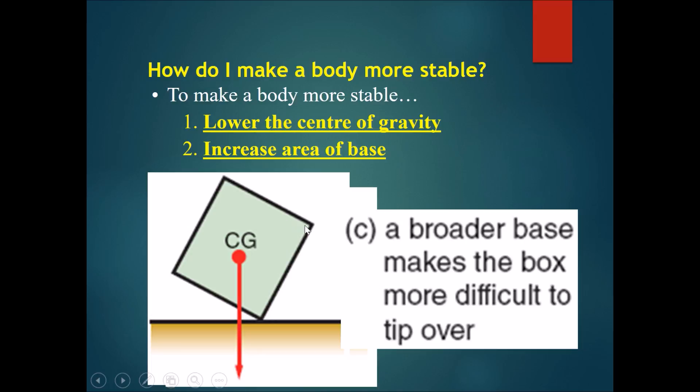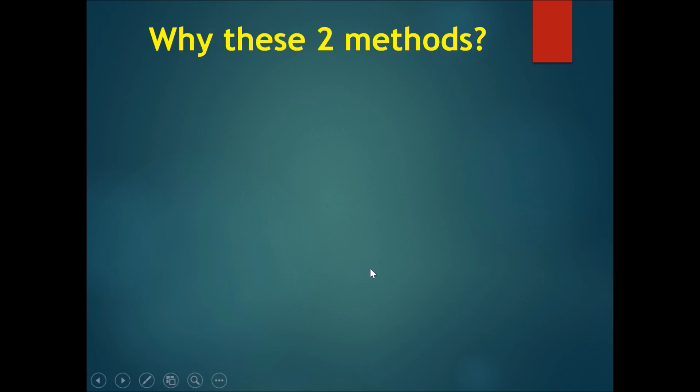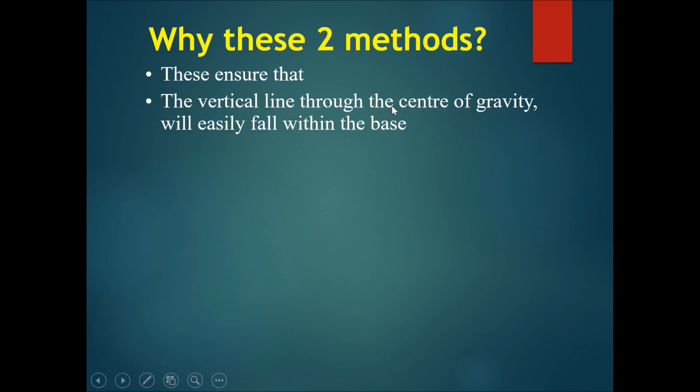Therefore, the object will require more of a tilt to move the center of gravity past the base. So, why these two methods? They ensure that the vertical line through the center of gravity will easily fall within the base unless it's tilted by a very large angle.